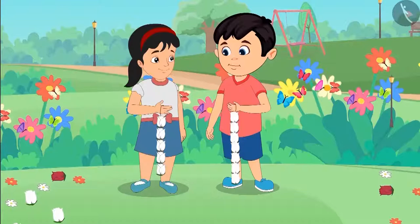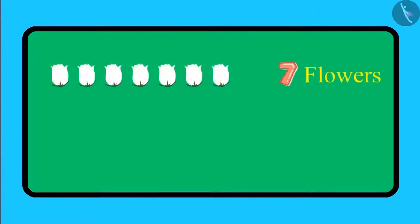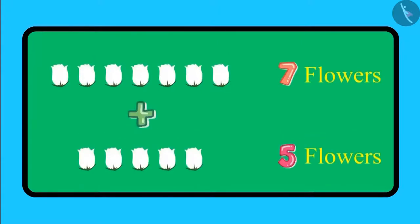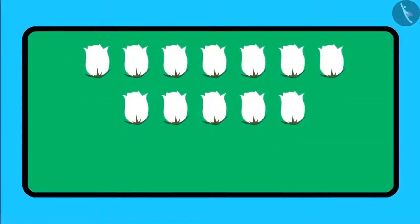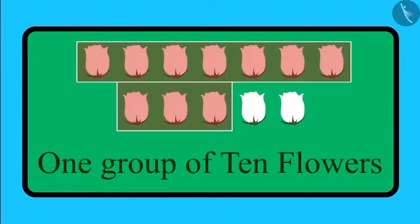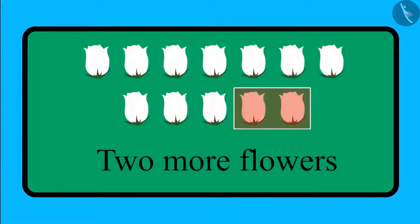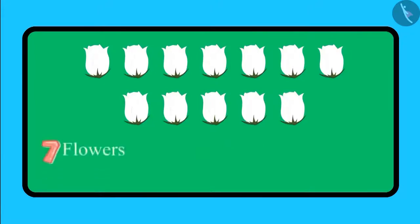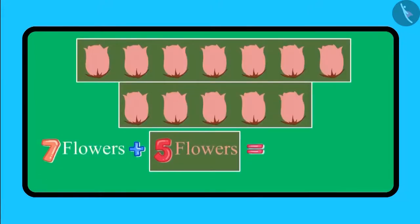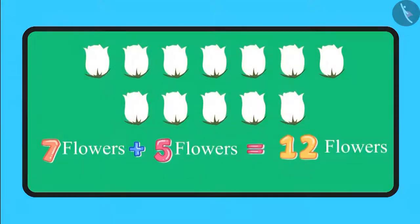So children, can you tell us how many white flowers did Chotu and Aarti use in their garlands? Chotu added 7 white flowers and Aarti added 5 white flowers. If we look at all the flowers together, we have one group of 10 flowers and 2 more flowers, so that makes a total of 12 flowers. 7 flowers added to 5 flowers make a total of 12 flowers.